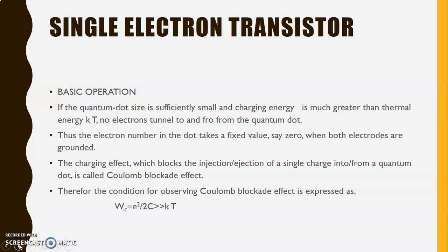That is, if both the electrodes are grounded then the electron number in the dot takes a fixed value, suppose it to be 0. The charging effect which blocks the injection or ejection of a single charge into or from a quantum dot is called the coulomb blockade effect. We saw in the last lecture what was a coulomb blockade effect.